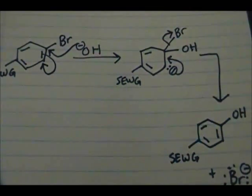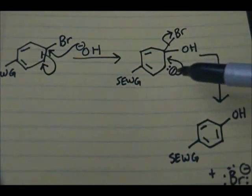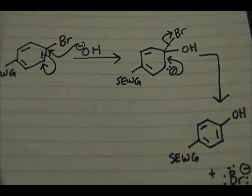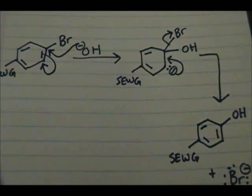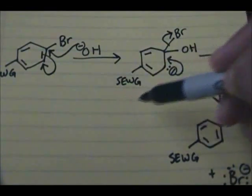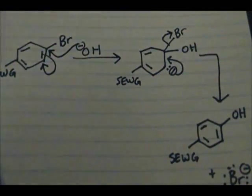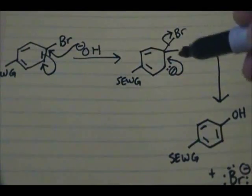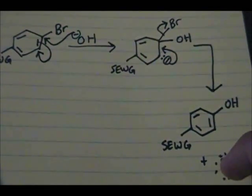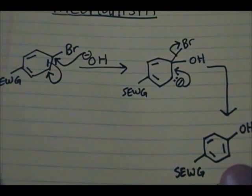Think about the reverse: if we had an electron donating group in that position, it would be donating into the system and adding more electrons to the carbon, making it even more unstable. That is why we have to have a strong or moderate electron withdrawing group — to pull away those electrons, spread the electron density, stabilize that carbon, and stabilize that negative charge. That's why you must have these types of groups present on the aromatic ring for nucleophilic aromatic substitution.